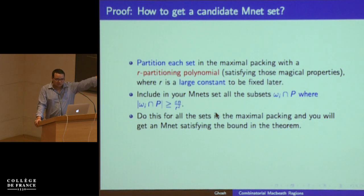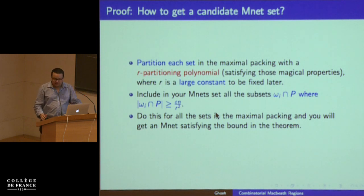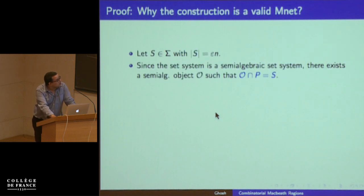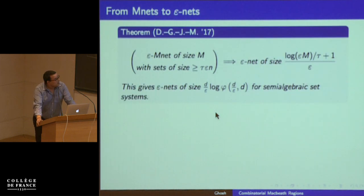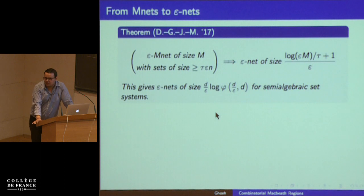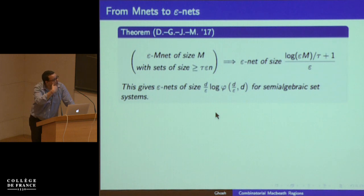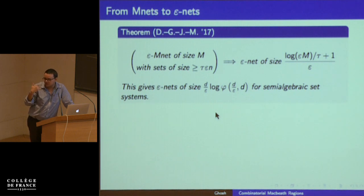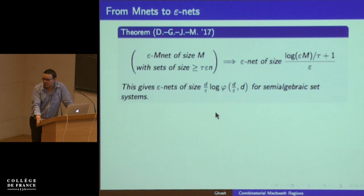Assuming the polynomial partitioning result is true, basic accounting gives you the M-net bound. Furthermore, this M-net result also implies optimal size epsilon nets for all geometric set systems we know of. The proof is: construct an M-net and do random sampling using alteration — a standard technique in the probabilistic method — to get optimal size epsilon nets for almost all geometric set systems you can think of.